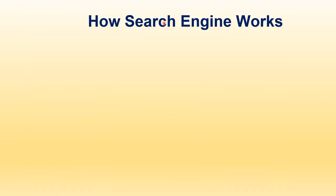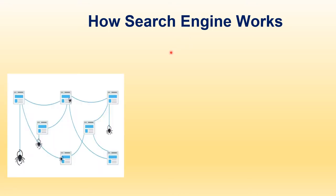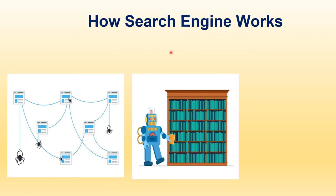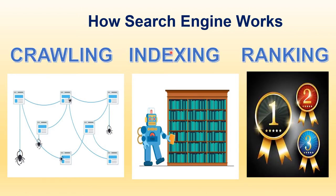A search engine has three primary functions: crawling, indexing, and ranking. Here we will speak about Google search. When you want a website or web page to appear in Google search, it has to be crawled. For that, a crawler, internet bot, web bot, or spider is used.